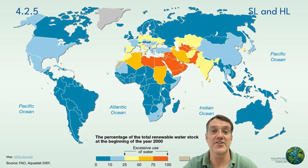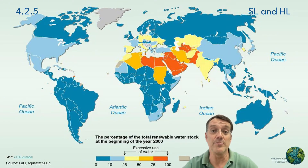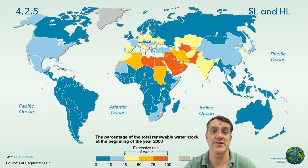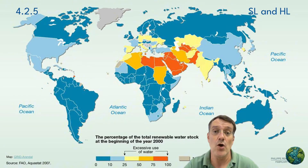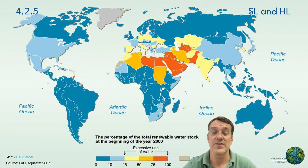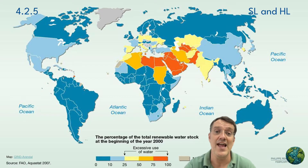This map highlights groundwater depletion hotspots worldwide. Groundwater aquifers — underground reservoirs that store water — are being depleted faster than they can naturally recharge in many regions. This creates a sustainability crisis as groundwater often provides a critical buffer during droughts and supports both agriculture and drinking water supplies. Once depleted, many aquifers take decades or centuries to recover.